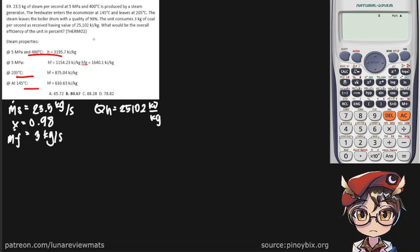What would be the overall efficiency of the unit in percent? Overall efficiency, so that sounds like we're finding E in percent. So to find E, our overall efficiency, we need the network and also the heat added, times 100%.